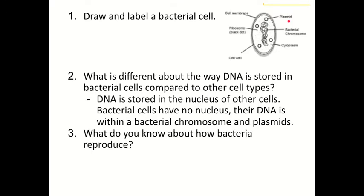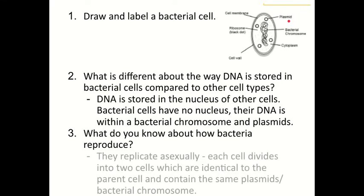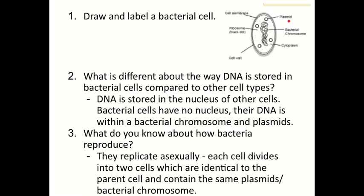What do you know about how bacteria reproduce? Bacteria can replicate asexually, and within this each cell divides into two cells which are identical to the parent cell, and contains the same plasmids and bacterial chromosome. So a cell would split into two daughter cells that were identical to one another, and this becomes really important when we look at the final stages of genetic engineering later on.